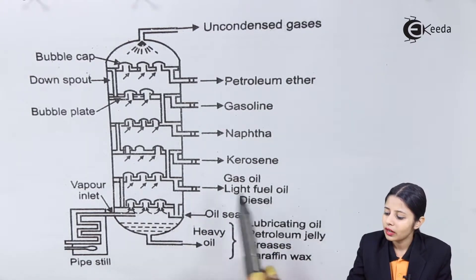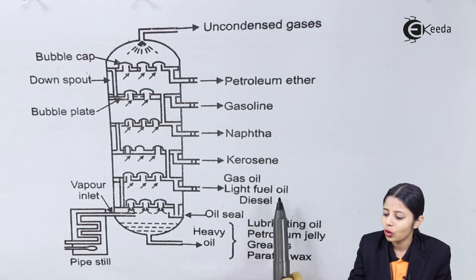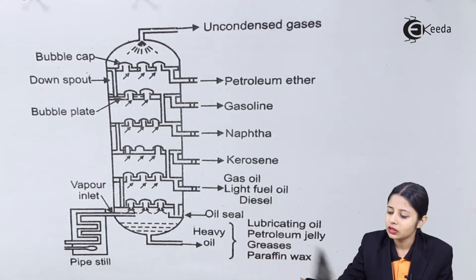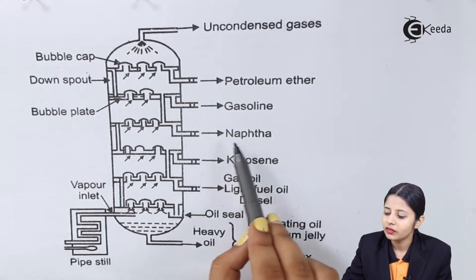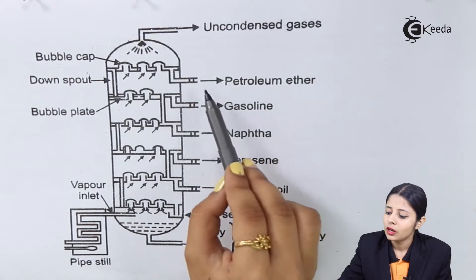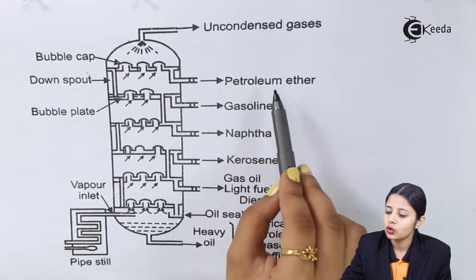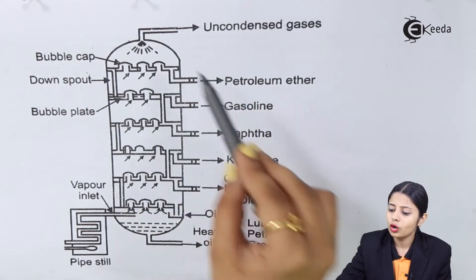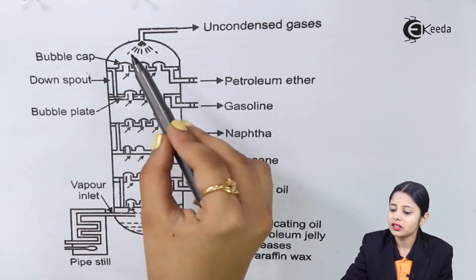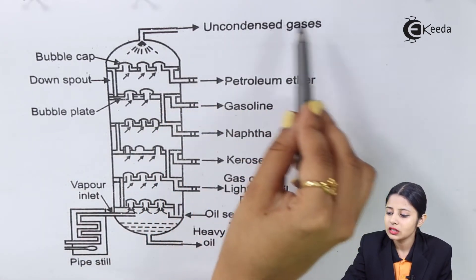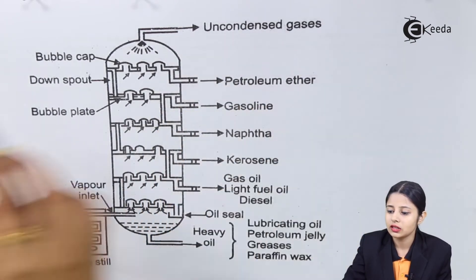At the bottom we have heavy oil and the inlet of the vaporized oil. Going upward, we have gas oil, then light fuel oil which is diesel, then kerosene above that, then naphtha, gasoline, and finally petroleum ether. After all of this, whatever remains are uncondensed gases, which come out at the top.